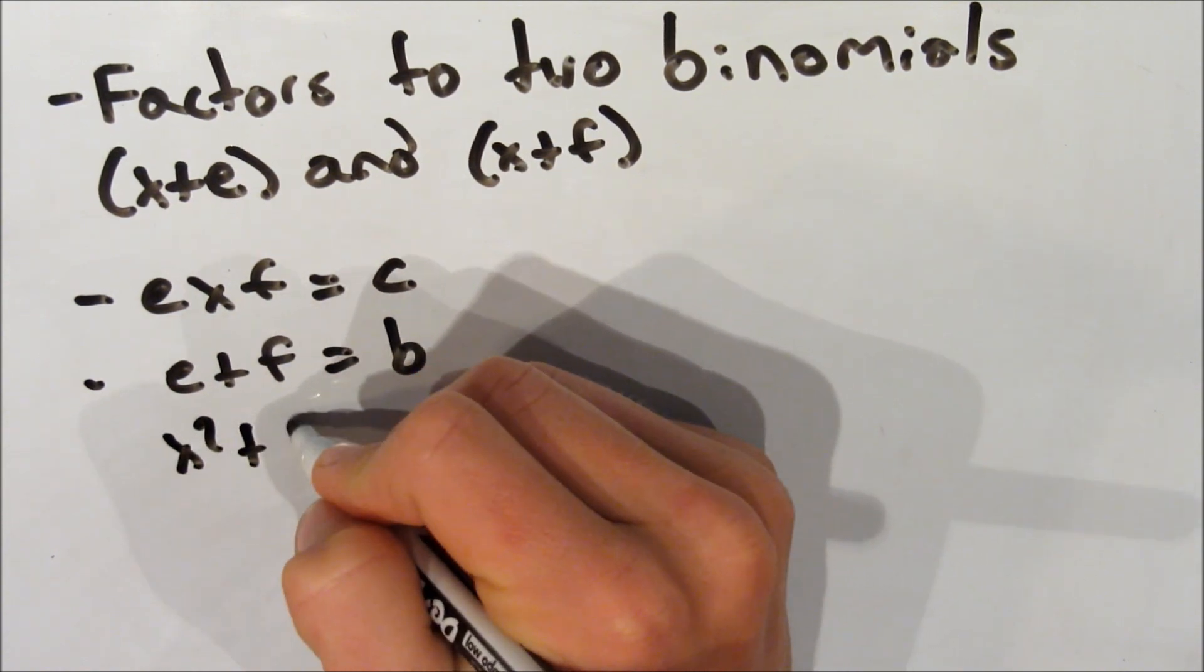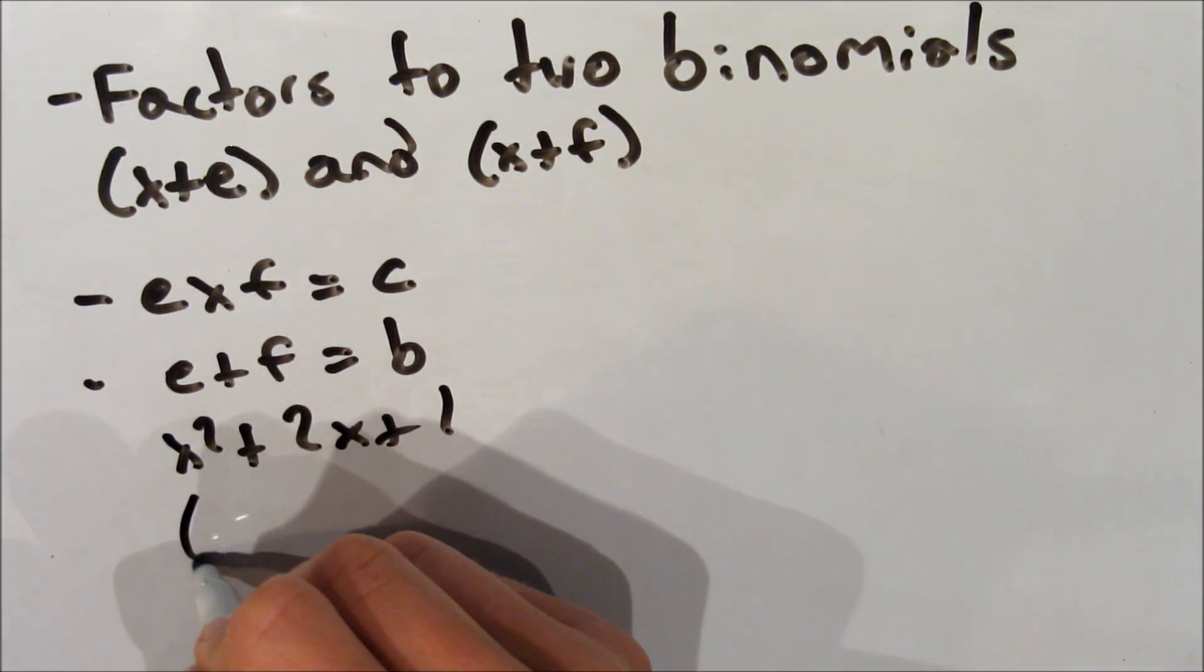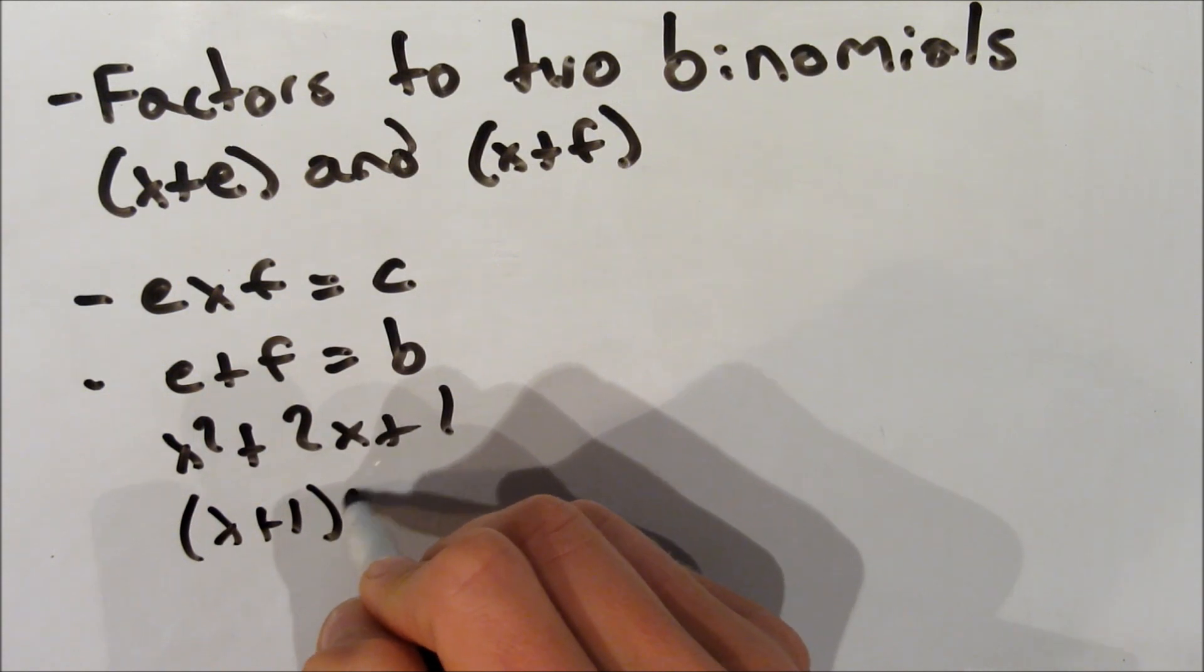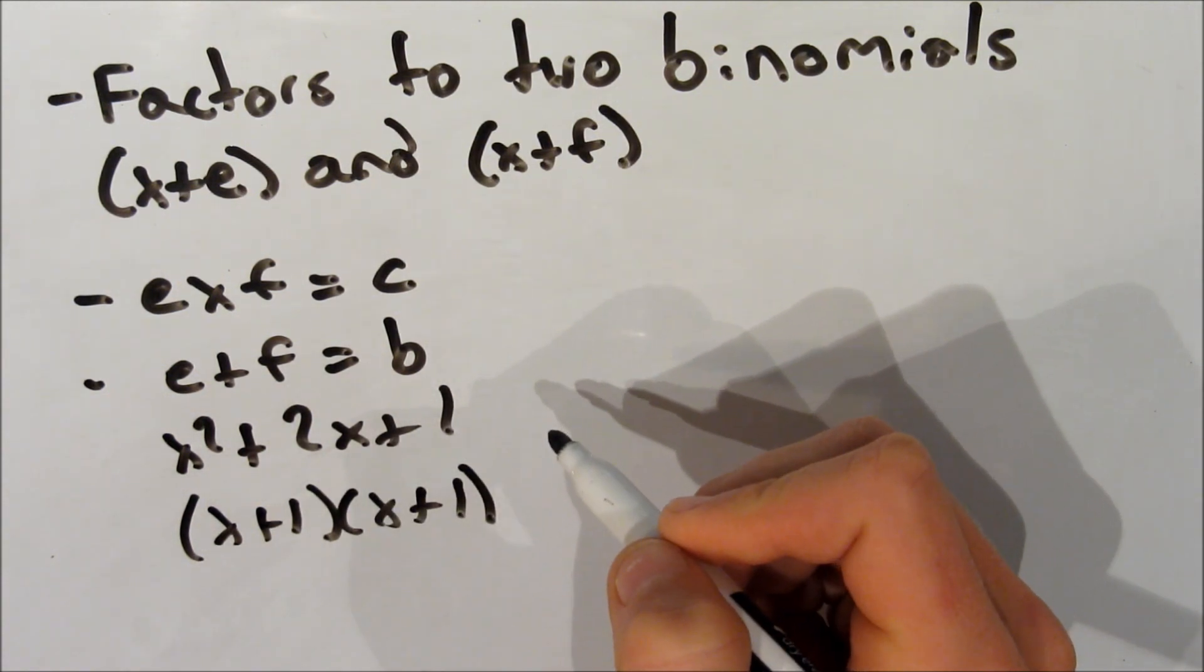So now let's go back and look at that example. So we have the same thing, x squared plus 2x plus 1. And when we look at it again, it goes into x plus 1 times x plus 1, like we saw before.